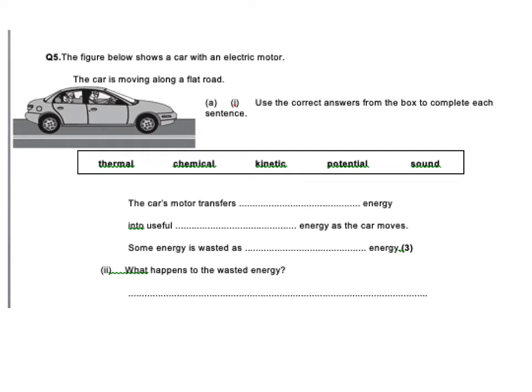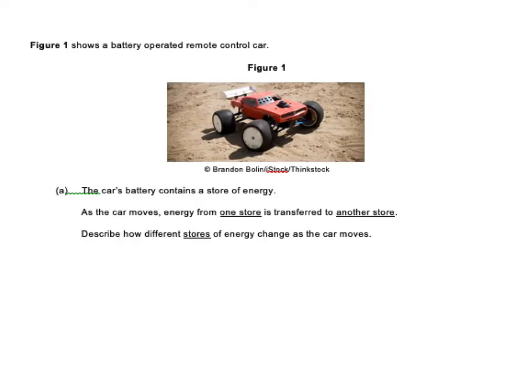The next one. The figure below shows a car with an electric motor. So you've got to use the correct answer again from the book. So the car motor transfers chemical energy, it's stored in the fuel into useful kinetic energy as the car moves. And some energy, again, is wasted as thermal, which is, again, what most of the wasted energy from lots of things is. What happens to the wasted energy? It goes into the surroundings. So that's something that's come up a lot. So you need to start getting really quick at remembering that that's where the wasted energy goes.